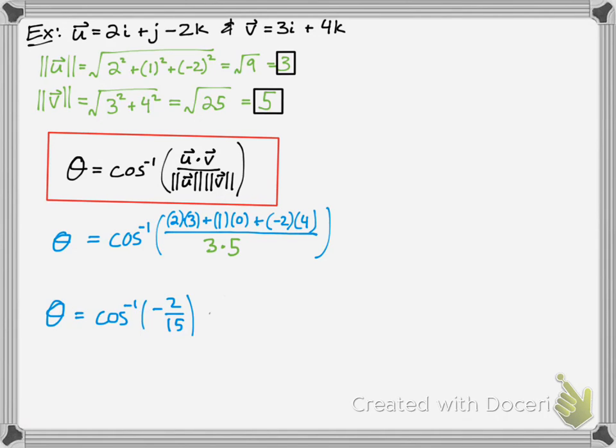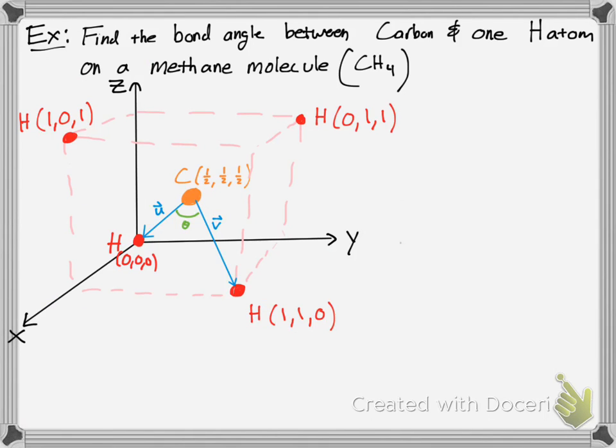And you get our theta to be the inverse cosine of negative 2/15, which is about 1.7 degrees. So we just figured out the angle between the vectors, but this is just what it looks like mathematically. Let's see if we have a better application here.